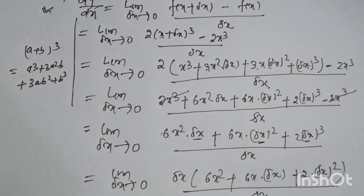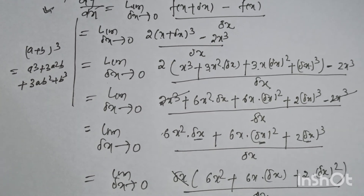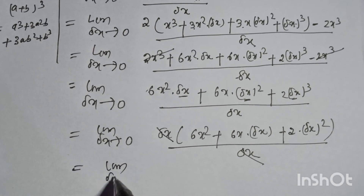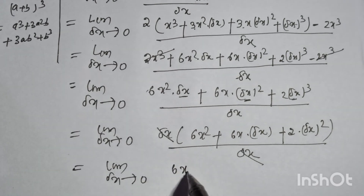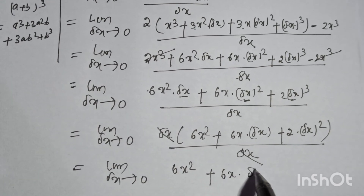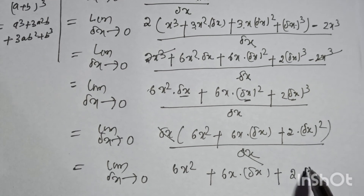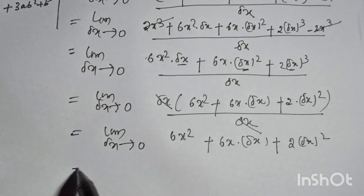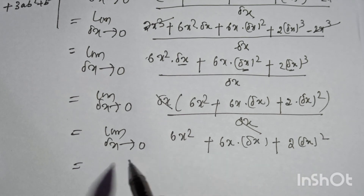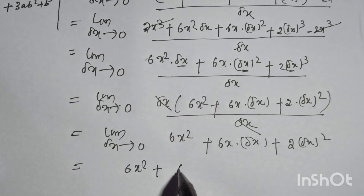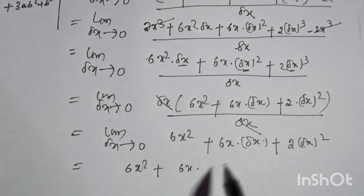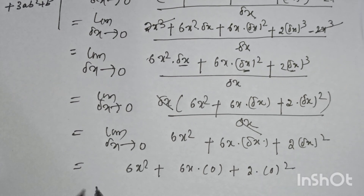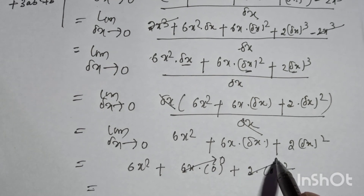The delta-x cancels. Taking the limit as delta-x tends to 0: 6x² plus 6x times 0 plus 2 times 0 squared. The last two terms become zero, leaving 6x².